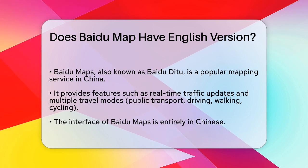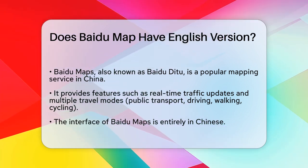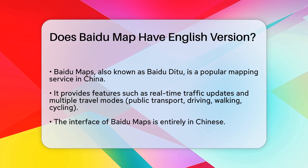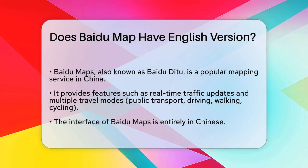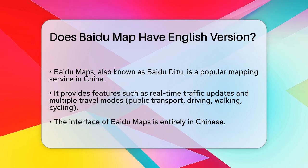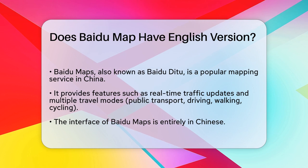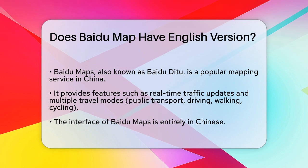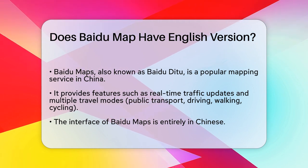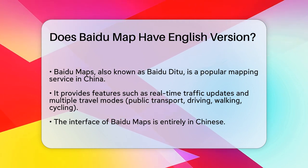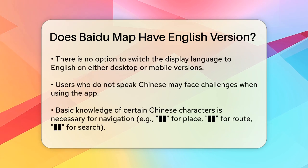Baidu Maps, also known as Baidu D2, is one of the most widely used digital maps in China. It offers a range of features like real-time traffic updates, various travel modes including public transport, driving, walking and cycling, and even street view navigation.